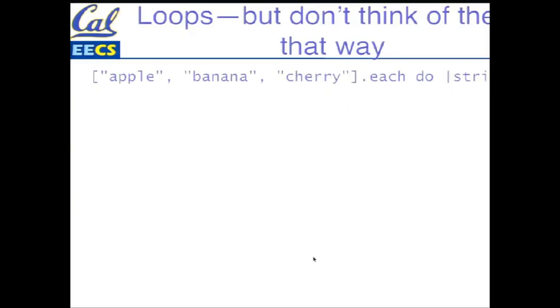I'll show you some loops, and then I'll tell you that I don't want you to think about them as loops, and then I'll tell you why. Most of them look pretty innocuous, and even if you haven't seen Ruby, you can kind of figure out: for each of these array values, I'm going to pass it to this block, this procedure, as the parameter string, and I'm just gonna print it out. That's pretty straightforward.